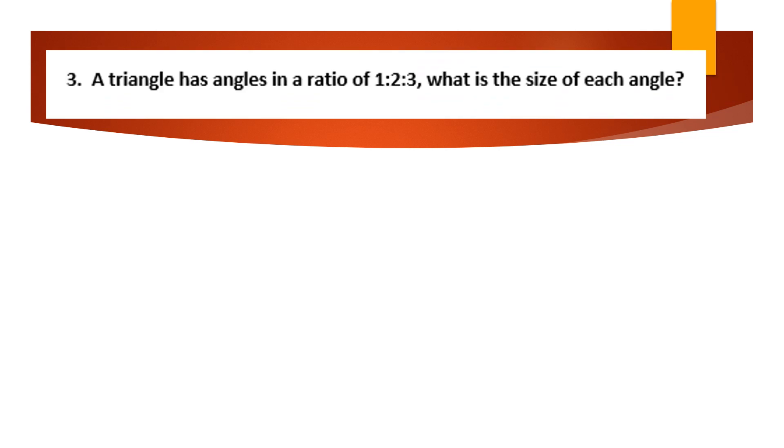So for this one, we've got a triangle. It has angles of a ratio of 1 to 2 to 3. What is the size of each angle? For this one, we should know that a triangle's angles add up to 180 degrees. So we're going to get that specific angle over 180 equals our first ratio, which was 1, over the total, which is 1 plus 2 plus 3, equals 6.